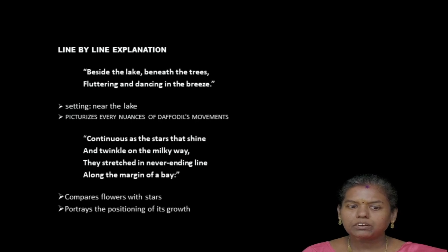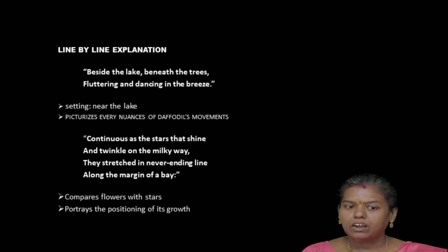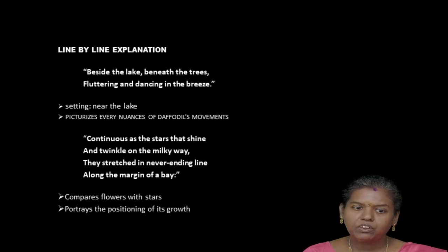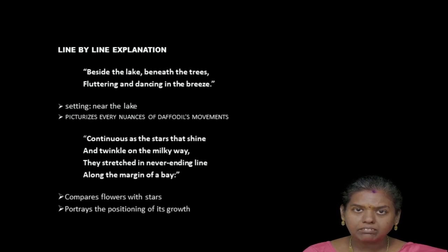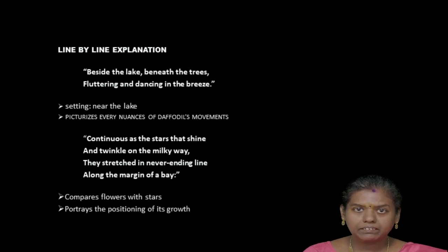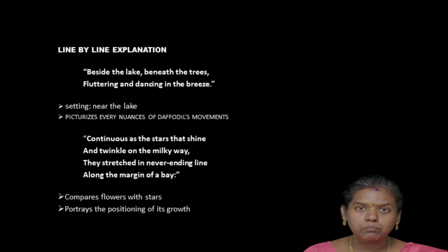He describes the scenic beauty of the path: 'beside the lake, beneath the trees, fluttering and dancing in the breeze.' He describes very lively how he sees the daffodils, giving us a vivid firsthand picture. The setting of the poem is near the lake — the daffodils are by the lake, under the trees, dancing in the breeze.